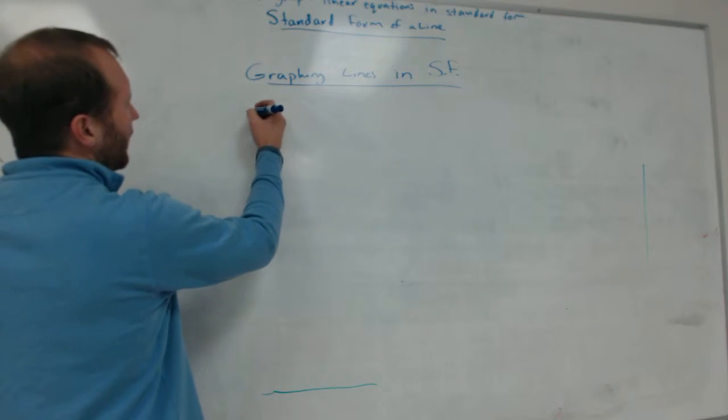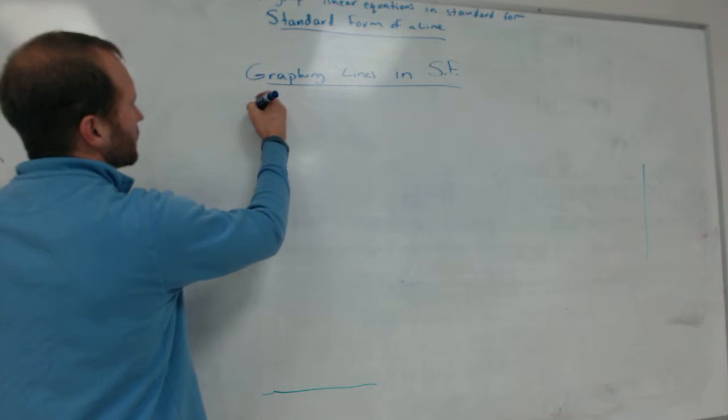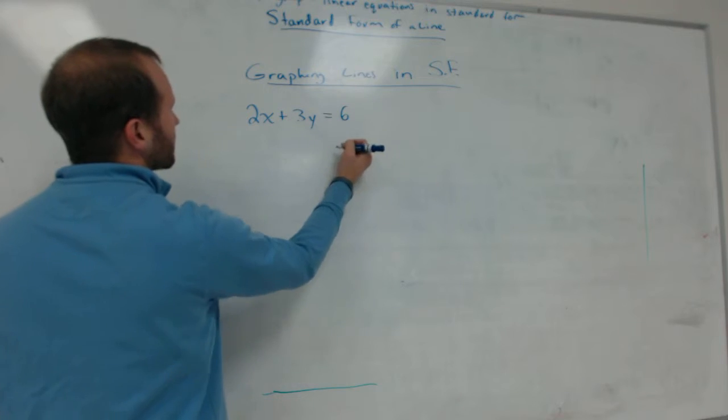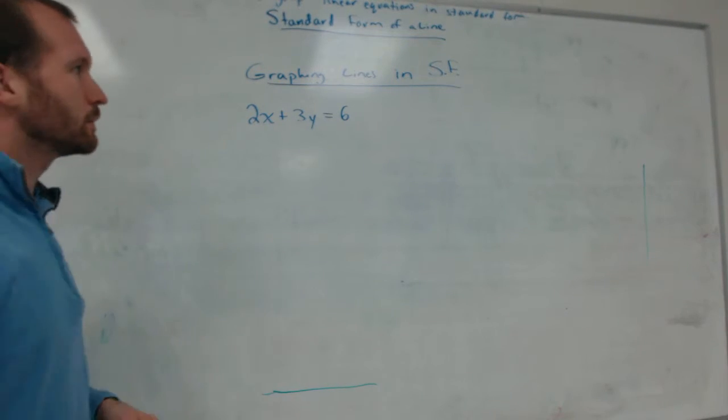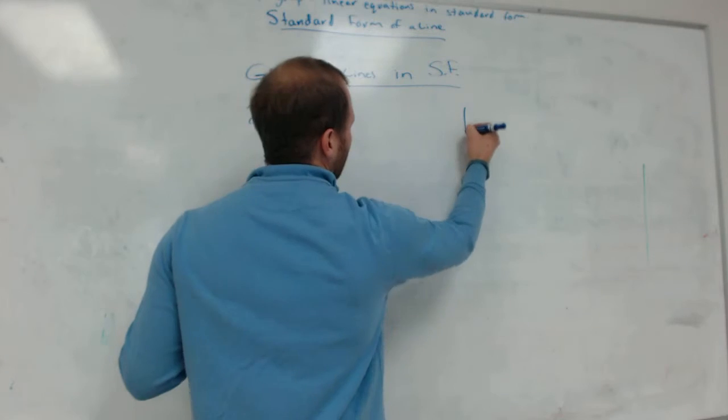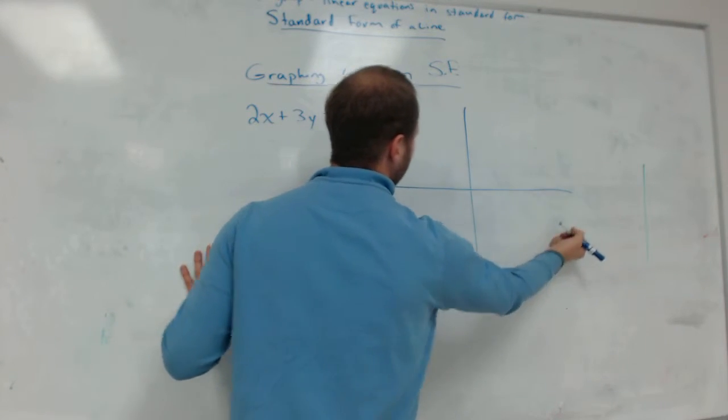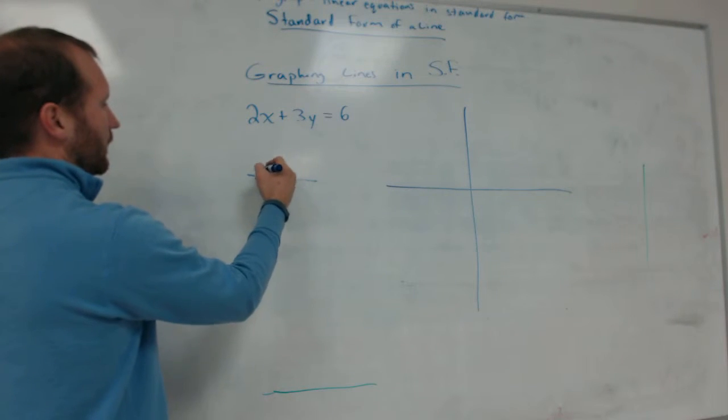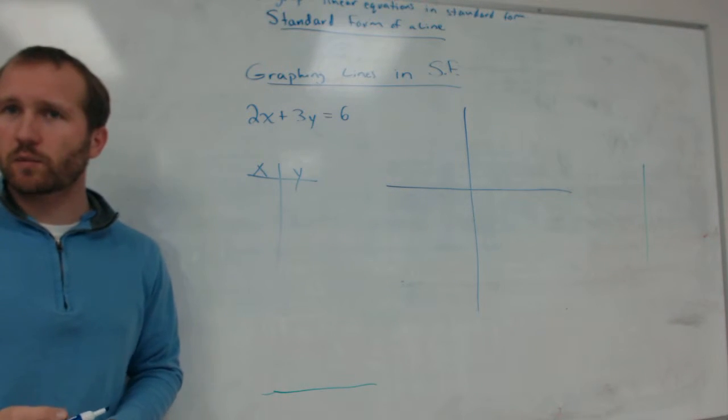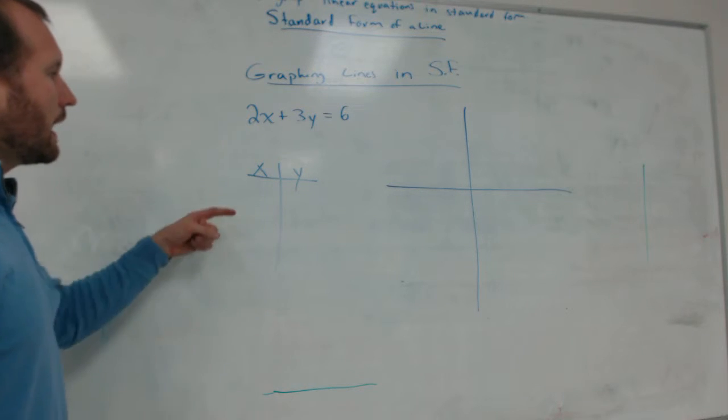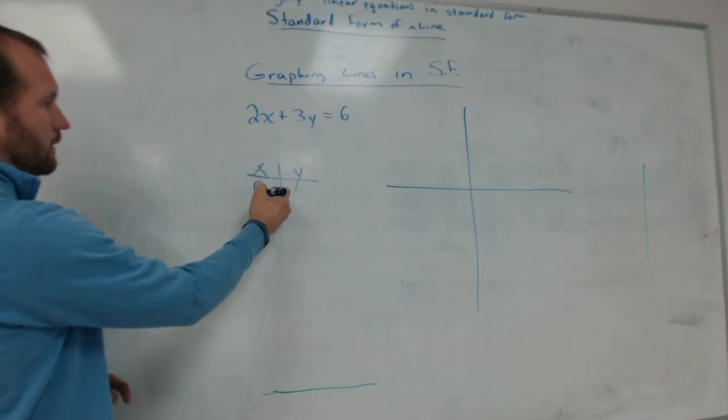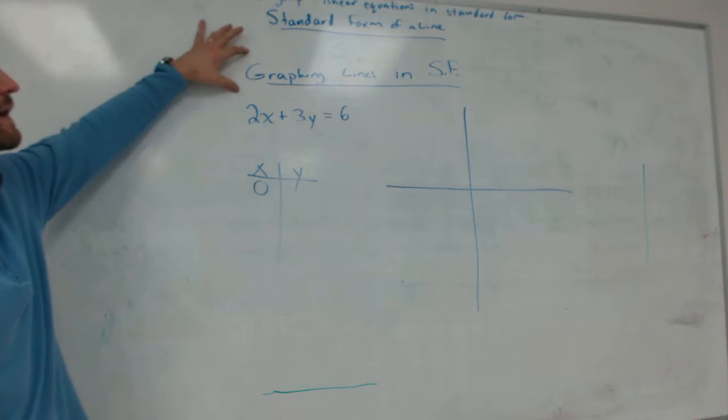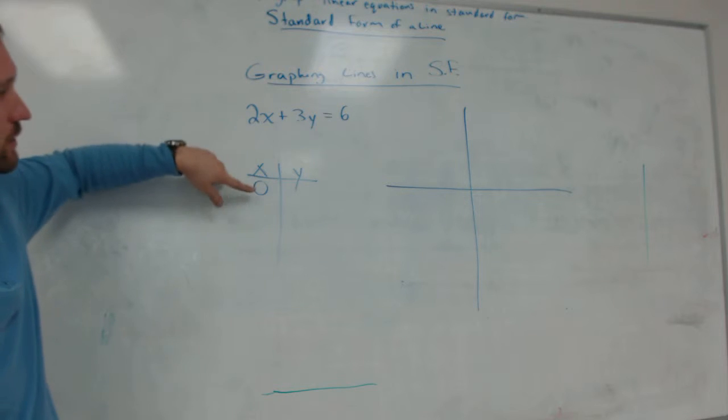So if I have a line like this, 2x plus 3y equals 6. I'm going to graph it by making a T-chart. So I've got my X and my Y. But the way that I do this T-chart is a little different than you're probably used to doing a T-chart. I'm going to pick 0 for X. Every single time. Every line in standard form, I want to pick 0 for X.